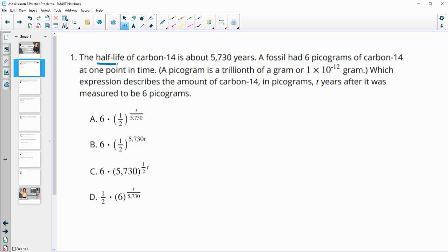Number one says the half-life of carbon-14 is 5,730 years. A fossil has six picograms of carbon-14 at one point in time. A picogram is a trillionth of a gram, which is 1 times 10 to the negative 12. Which expression describes the amount of carbon-14 in picograms T years after it was measured to be six picograms? There are a lot of numbers here you can ignore, including the 14 from the carbon and this whole thing about what a picogram is.